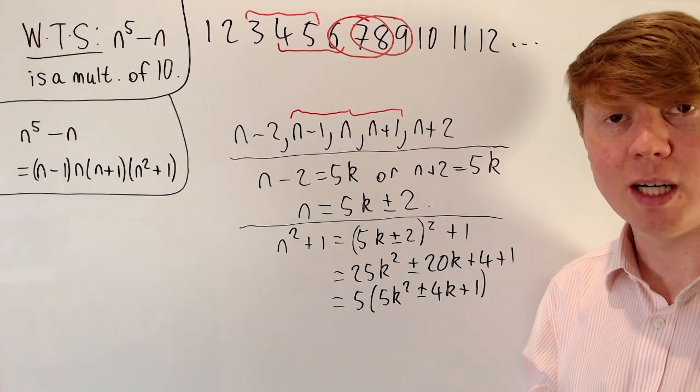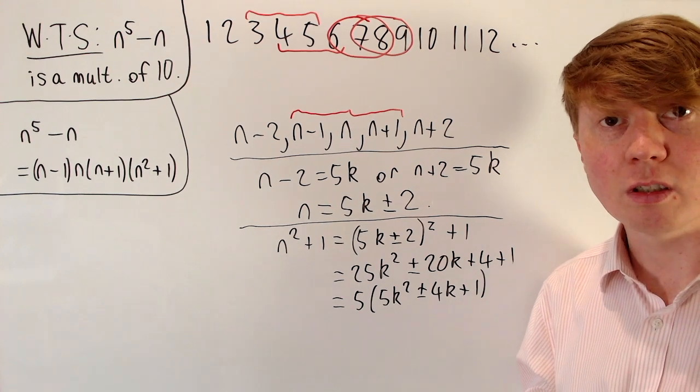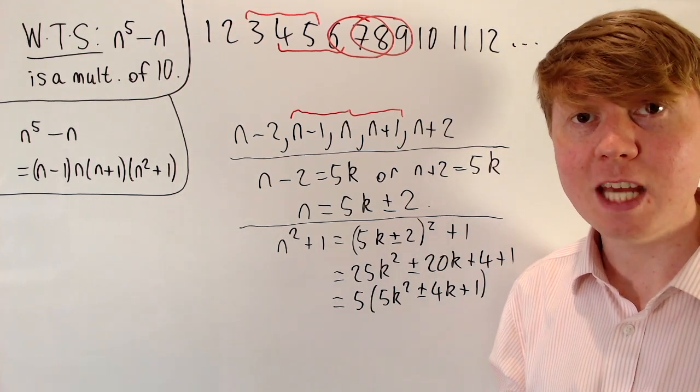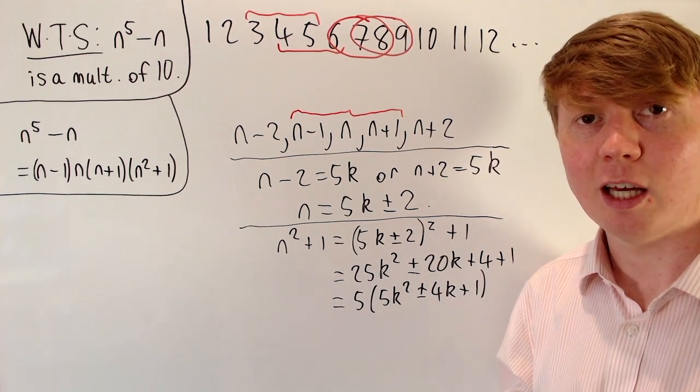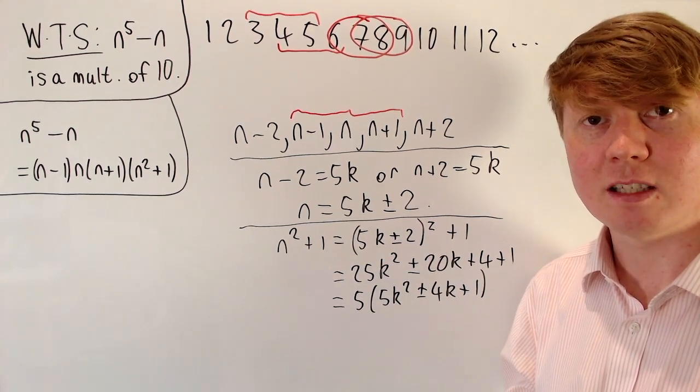So n to the 5 minus n has to be a multiple of 5, and it also has to be a multiple of 2. So we can conclude that this is a multiple of 10, which means that n to the 5 and n, whatever your value of n is, as long as it's an integer, will have the same last digit.